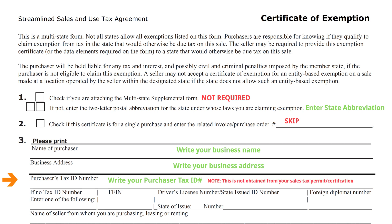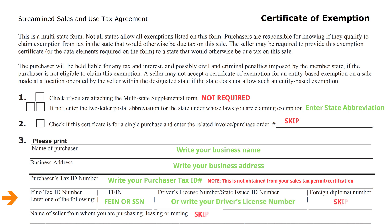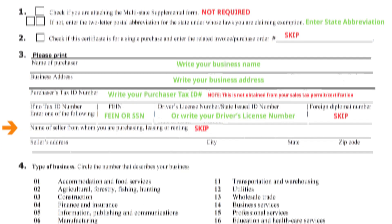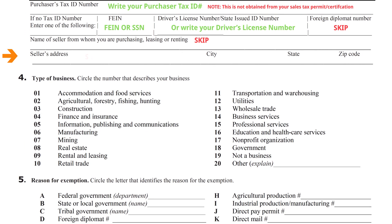Note, this is not typically found on your sales tax permit. If you do not have a tax ID number, that's okay. You can provide either an FEIN or social security number, or your driver's license information. Please skip the next two lines — seller name and address information should be left blank.